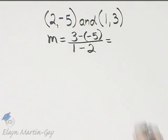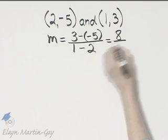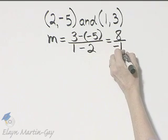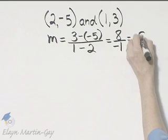3 minus a negative 5, that's 3 plus 5 or 8, over that's negative 1, so I have a slope of negative 8.